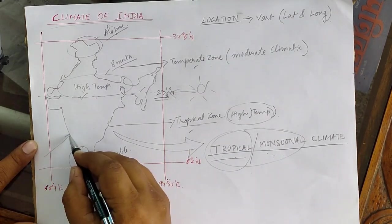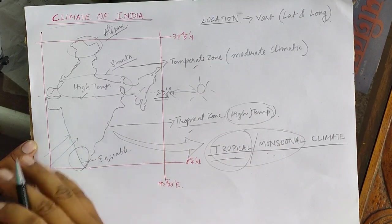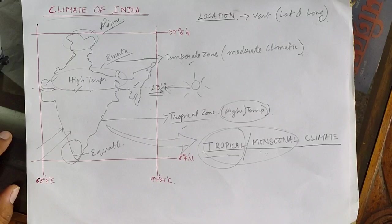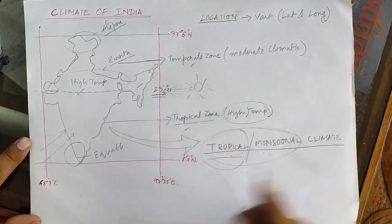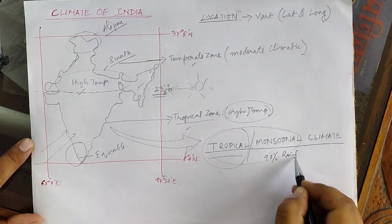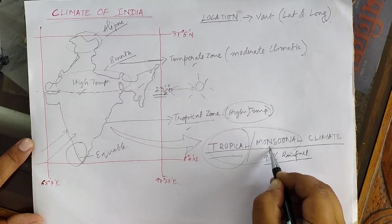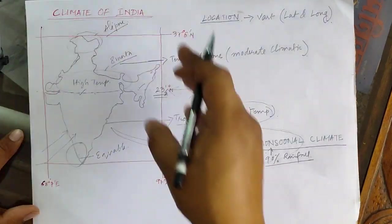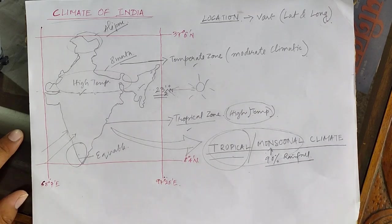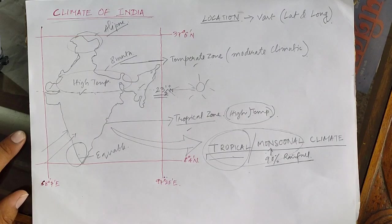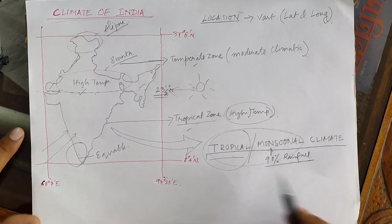Now, what is monsoon? Monsoon winds enter from the Arabian Sea and the Bay of Bengal and cause rainfall all over the country. Monsoonal winds influence the climate significantly — about 90 percent of the rainfall in our country is because of the monsoon winds. There is a clear dominance of high temperature and monsoonal winds all over the country, and because of that the climate of our country is termed as tropical monsoonal climate.